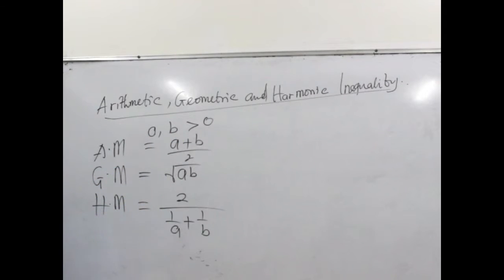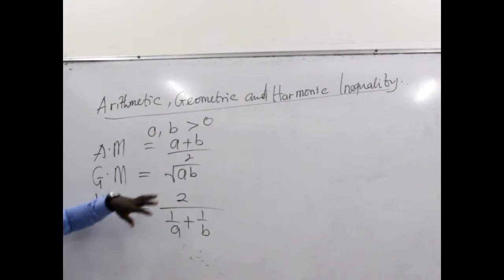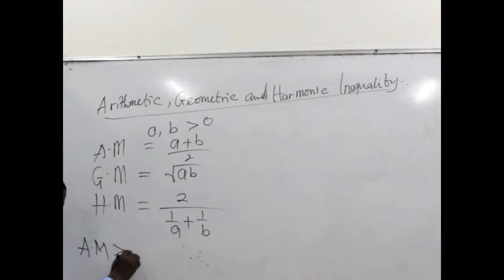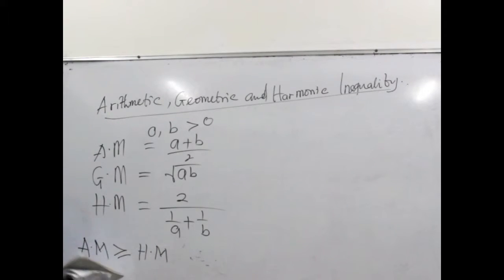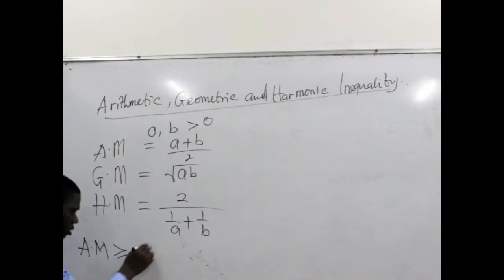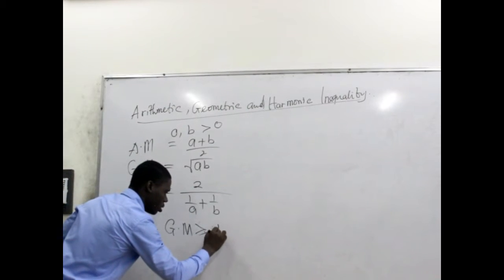So we have arithmetic mean, geometric mean, and the harmonic mean. We want to see proof that the arithmetic mean is greater than or equal to the geometric mean, and the geometric mean is greater than or equal to the harmonic mean. So we try to prove that AM ≥ GM ≥ HM.